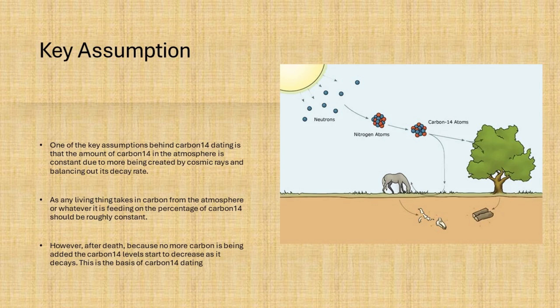One of the key assumptions behind carbon-14 dating is that the amount of carbon-14 in the atmosphere is constant, due to more being created by cosmic rays balancing out the decay rate. As any living thing takes in carbon from the atmosphere or whatever it is feeding on, the percentage of carbon-14 should be roughly constant. However, after death, because no more carbon is being added, the carbon-14 level starts to decrease as it decays. This is the basis of carbon-14 dating.